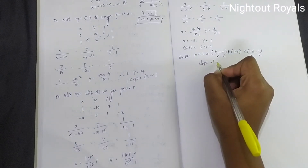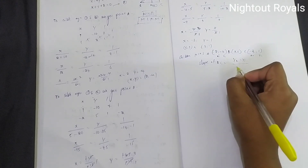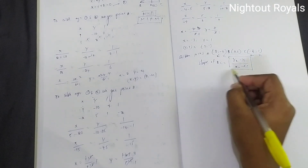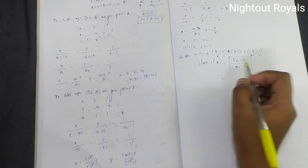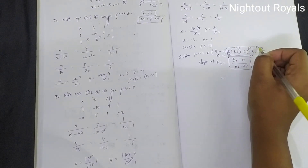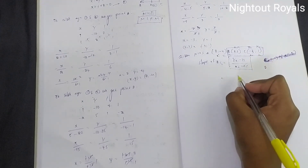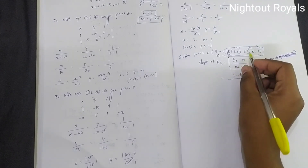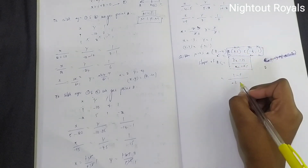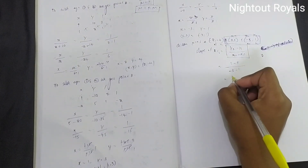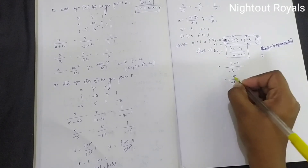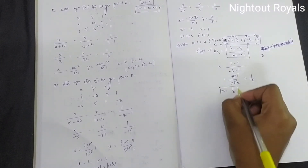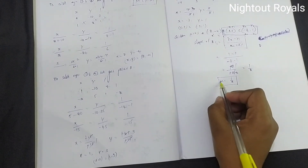Slope of BC equals y2 minus y1 by x2 minus x1. This is the formula for slope. B is (x1, y1) and C is (x2, y2). So slope of BC equals 1 minus 3 by minus 3 minus 1, which equals minus 2 by minus 4, equals 1 by 2. So m equals 1 by 2.